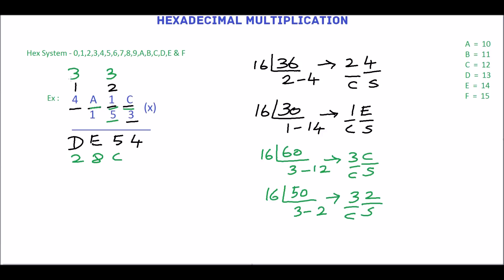Then multiply 5 by 4, which is 20. Then add carry 3. 20 plus 3 is 23. 23 is also not a hex number. We will convert this — the quotient is 1 and the remainder is 7. The equivalent hex number is 17. In this, 7 is the sum and 1 is the carry. Write the hex number 17.